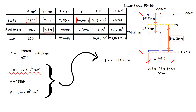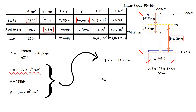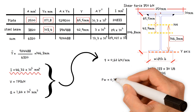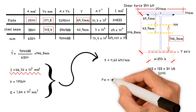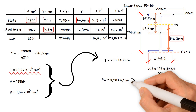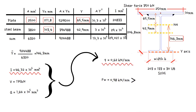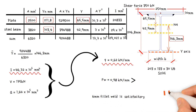Finally, let's look at a 6 mm fillet weld. The strength of a fillet weld of leg length 6 mm for S275 equals 0.163 × 6 mm, which gives a value of 0.98 kN/mm. This is greater than the required 0.62 kN/mm. Therefore, a 6 mm fillet weld is deemed satisfactory.